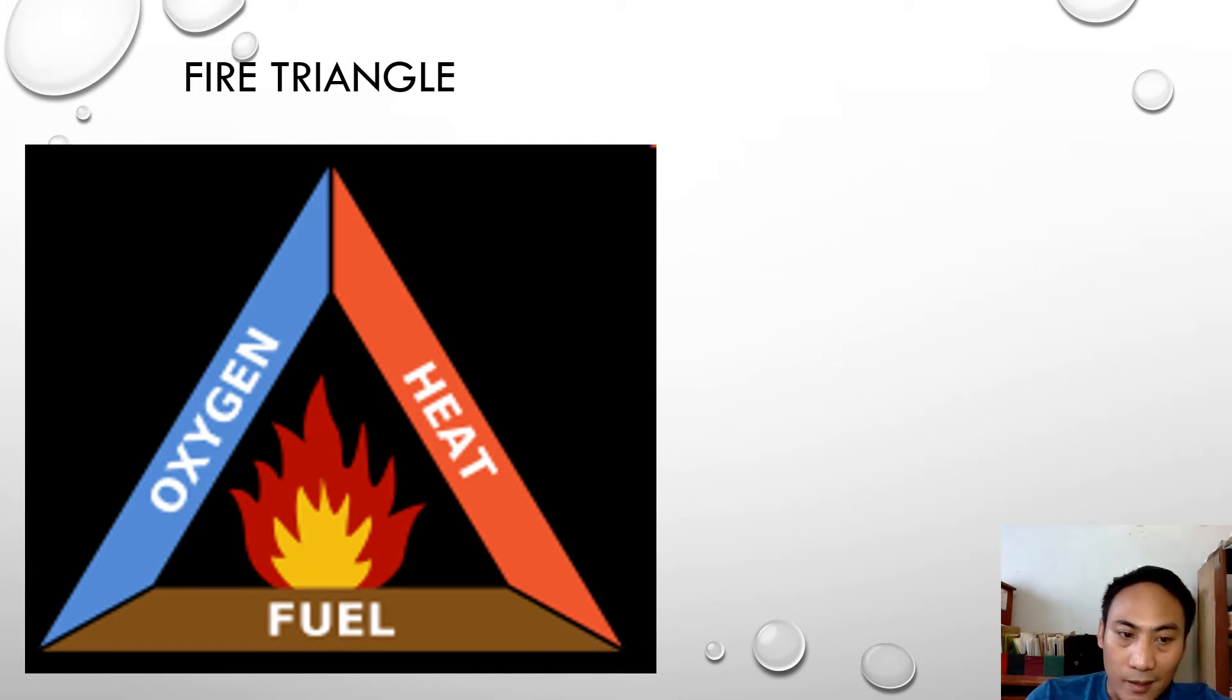Without sufficient heat - if we have fuel and oxygen but no sufficient heat - the fire will not continue. How do we remove the heat? We administer, for example, water. The water reduces the heat. When the heat is reduced, the fire can die.